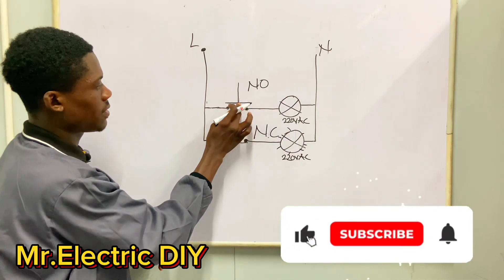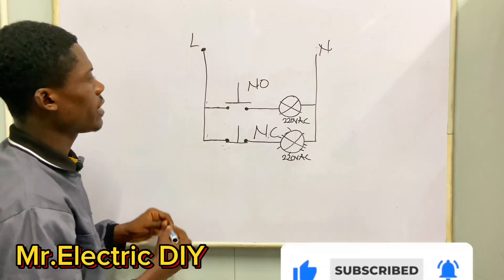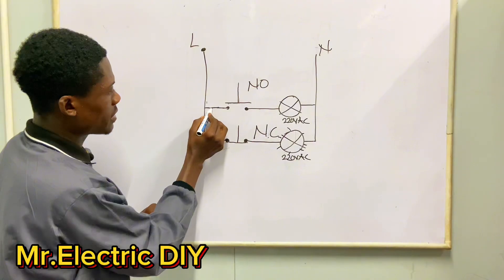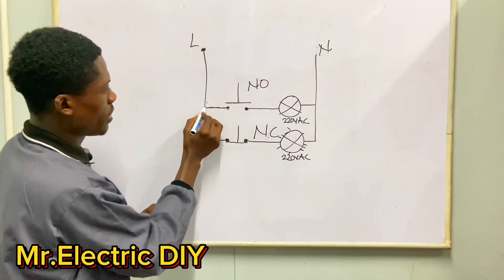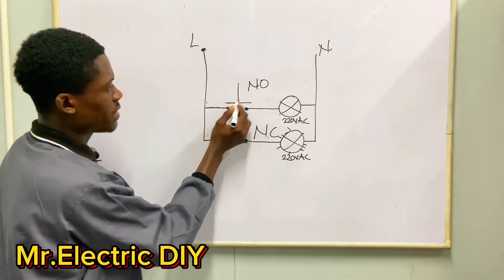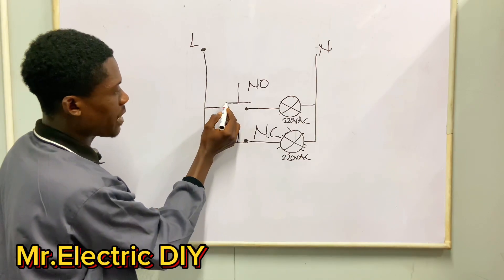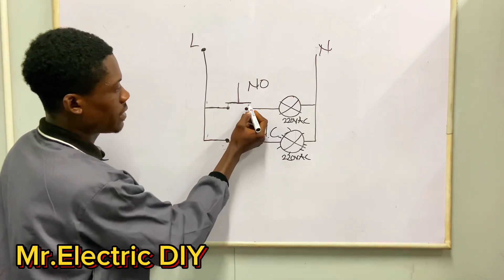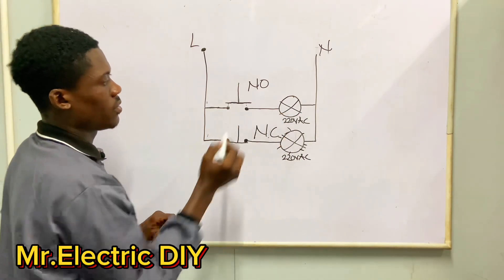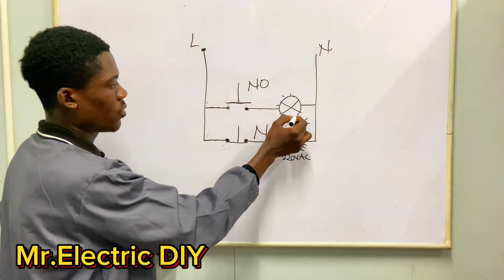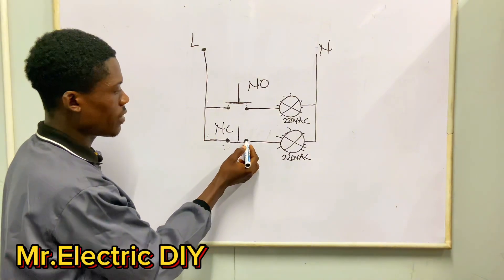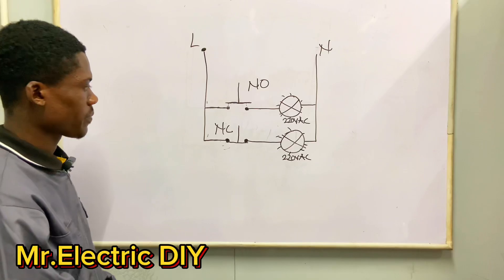This side is normally open — normally open does not conduct electricity unless we push it. When you push the button, it comes and links to this contact. So right now we have the live, but if I connect this to a live wire practically, the live will be trapped at this side unless I push it. Then the bar will come and link to this contact, making a flow of current from this side to this side and from here to the lamp, causing it to glow when pushed.